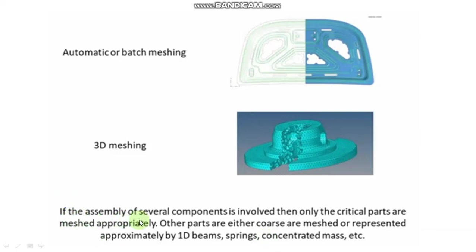If the assembly of several components is involved, then only critical parts are meshed appropriately. Other parts are meshed coarsely and represented approximately by 1D beams, springs, concentrated masses, etc.